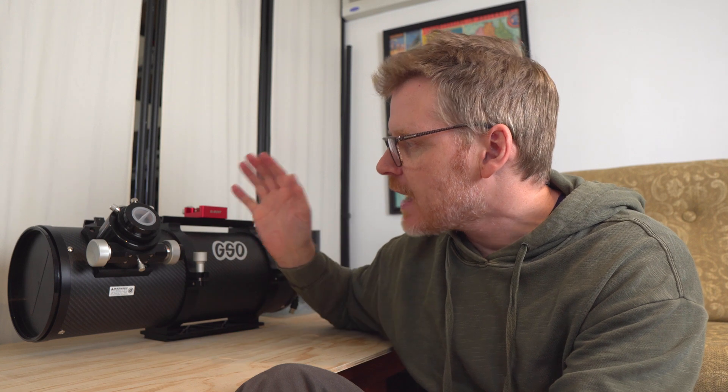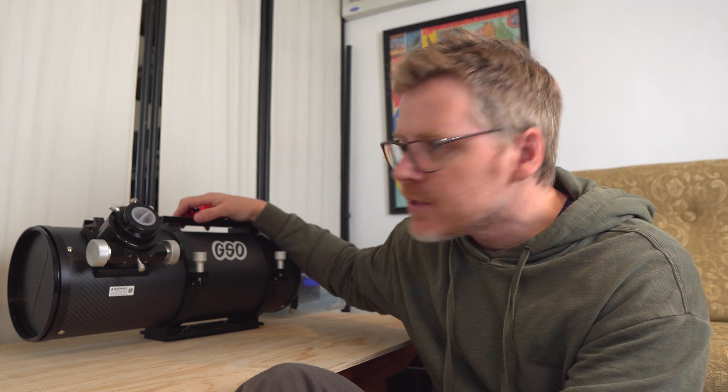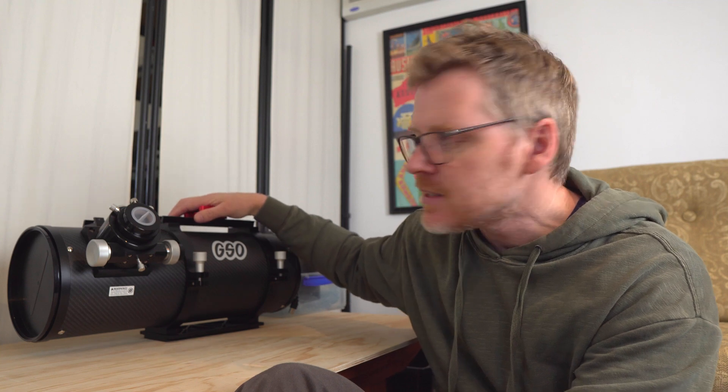So this came up. I wasn't particularly looking for a telescope, honest, but this came up second-hand and obviously it's a little Newtonian. It's one of those Newtonians that's really made for imaging, so it's pretty fast. It's an f4, 600mm Newtonian.